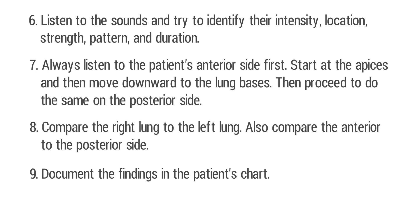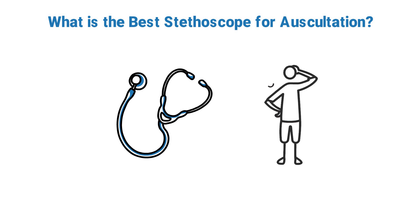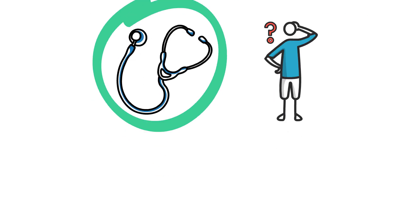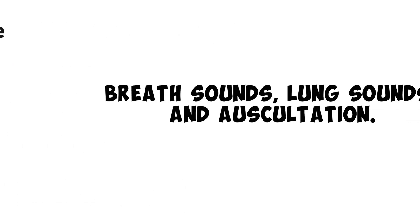Remember: in the hospital, if it doesn't get documented, it never happened. Now, for the final portion of this video — what is the best stethoscope for auscultation? In order to perform auscultation and listen to breath sounds in the most effective way possible, you need a high-quality stethoscope. Our top recommendation is the 3M Littmann Classic III stethoscope — it's our favorite because you get the most bang for your buck. It's a high-quality stethoscope great for listening to breath sounds at a reasonable price compared to the more expensive cardiology models.